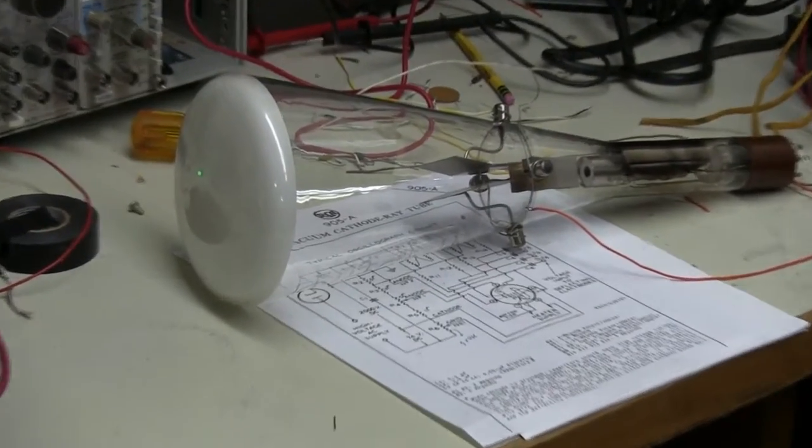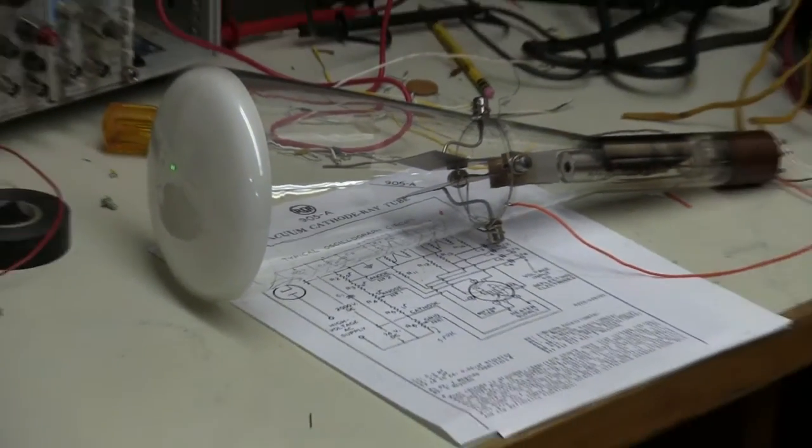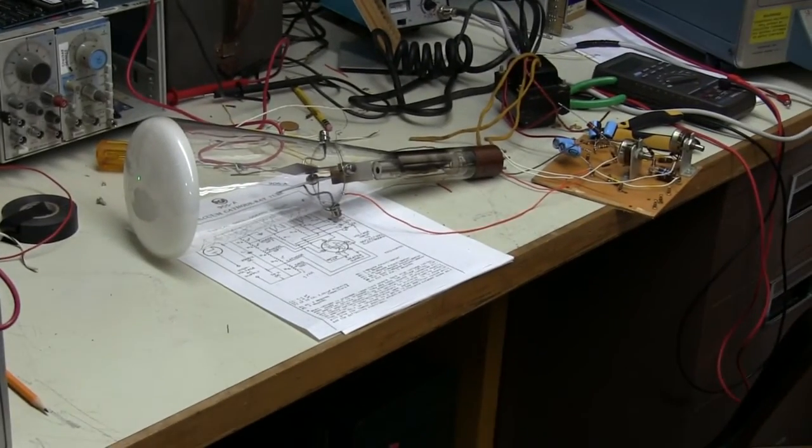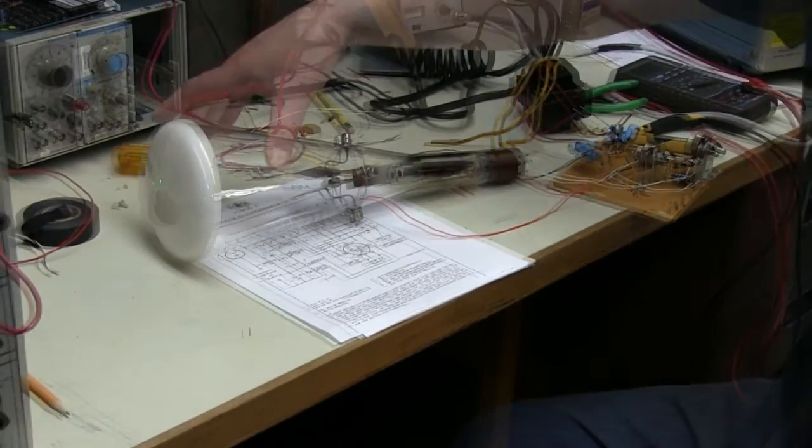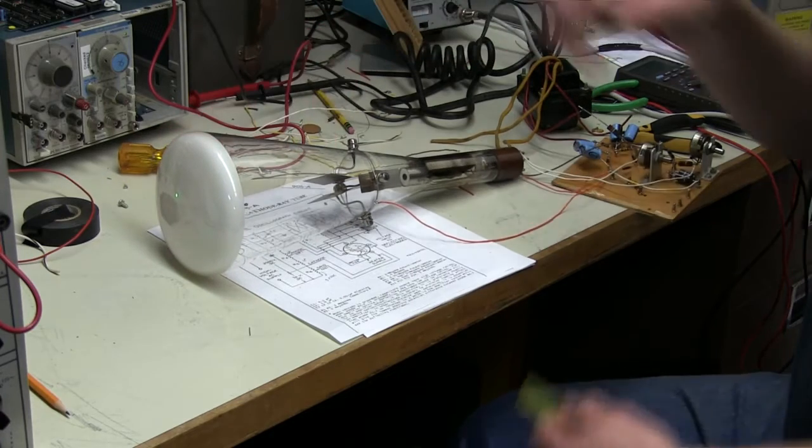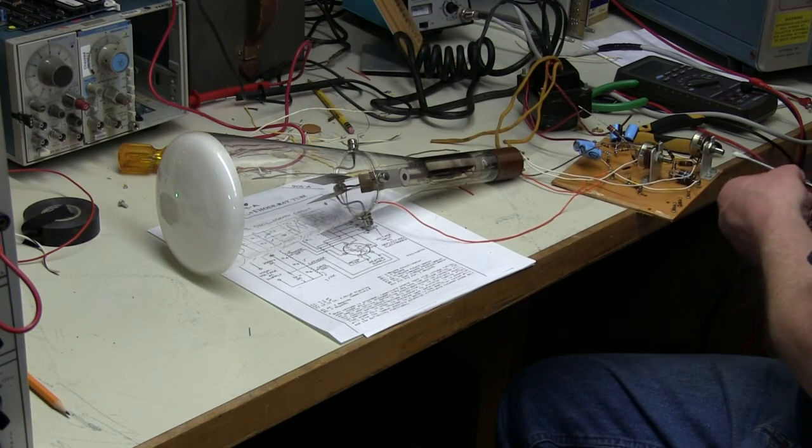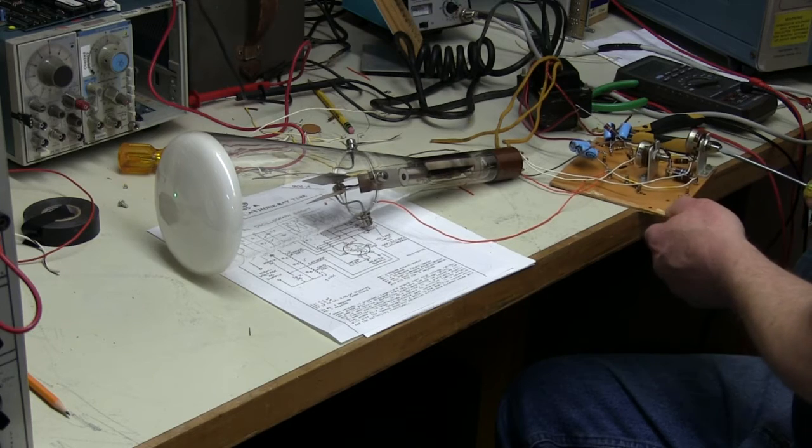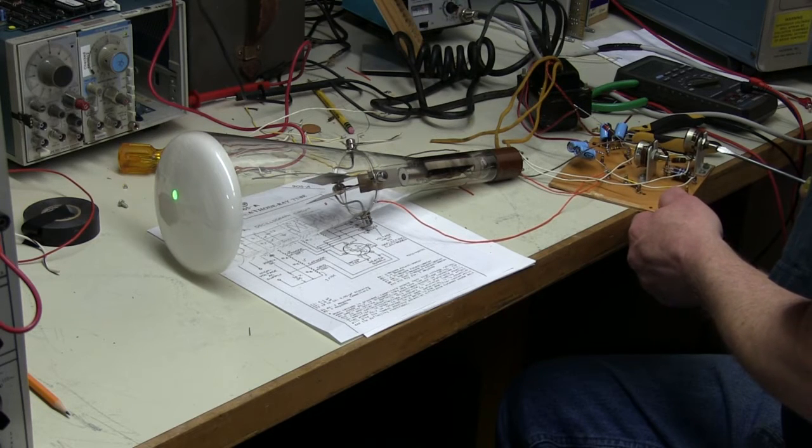A little closer view of the CRT and the spot, with the data sheet handy there on the bench. The 905 is a nice choice for a demo because it doesn't have an AquaDag coating inside, so you can see everything inside, all the elements of the CRT.